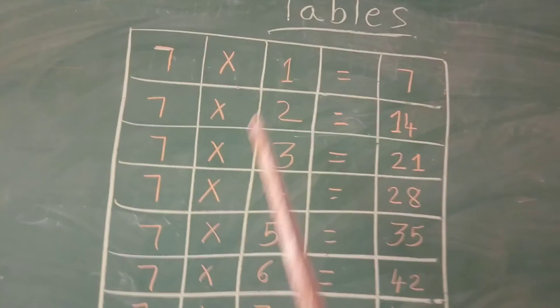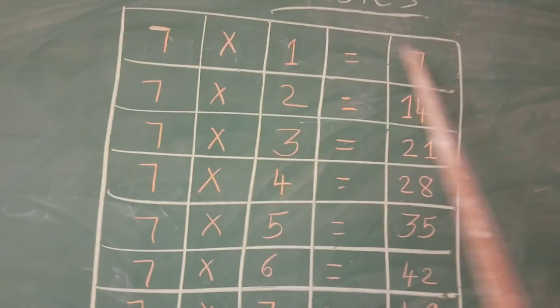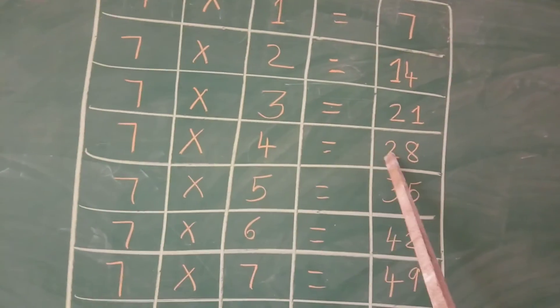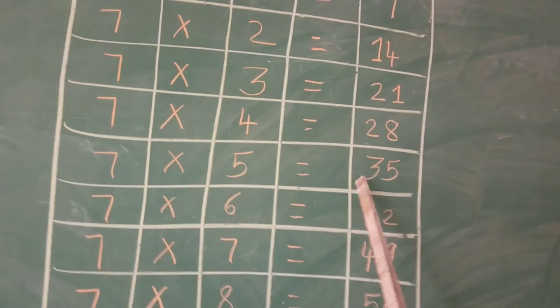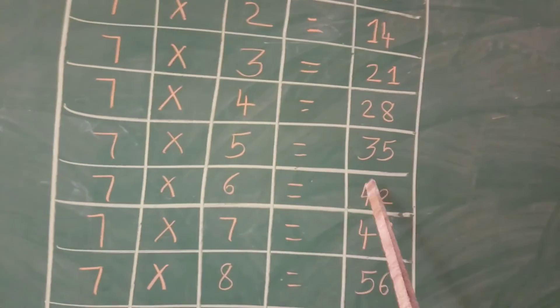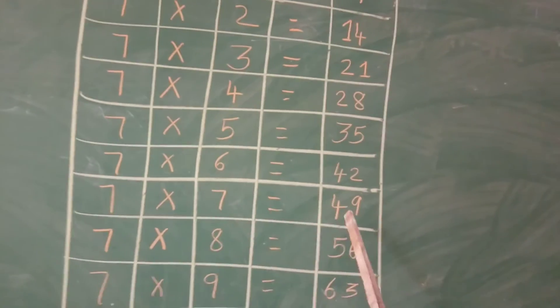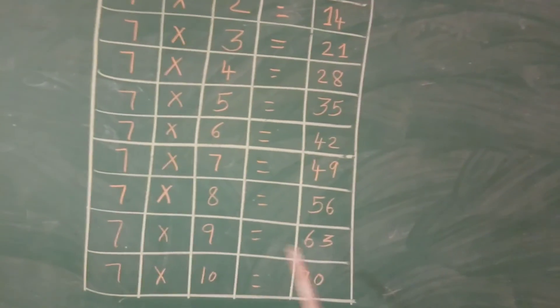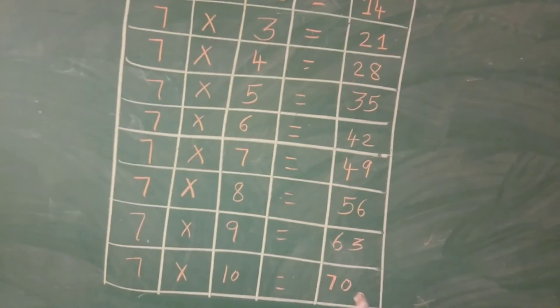See here children, all of you read it. 7 ones are 7. 7 twos are 14. 7 threes are 21. 7 fours are 28. 7 fives are 35. 7 sixes are 42. 7 sevens are 49. 7 eights are 56. 7 nines are 63. 7 tens are 70.